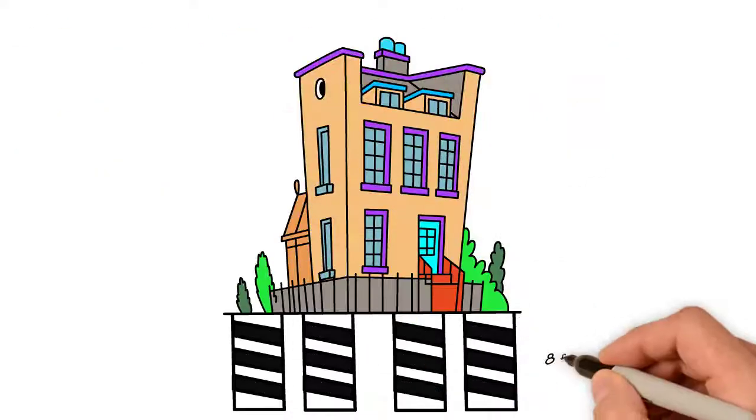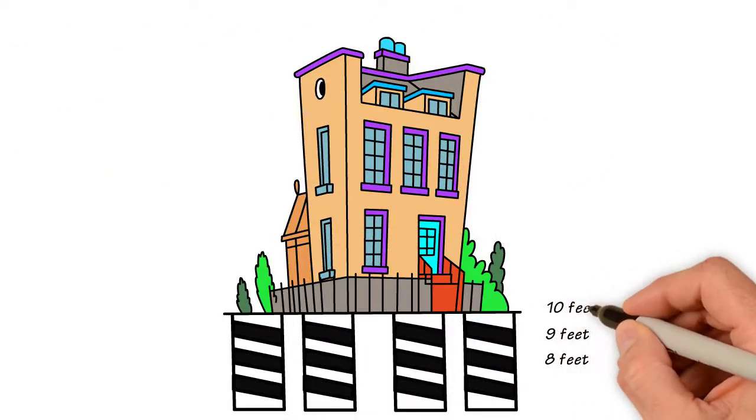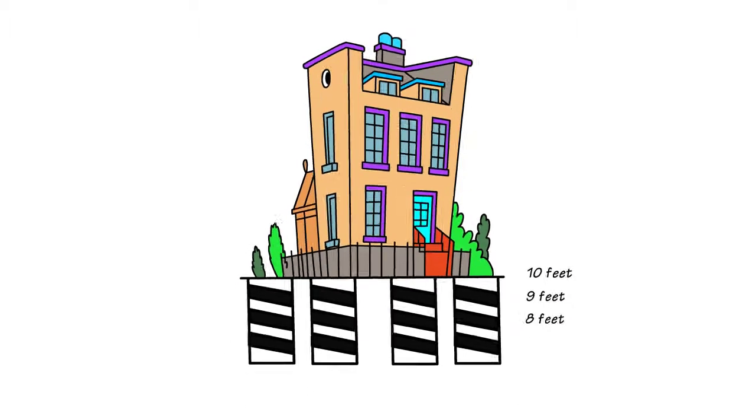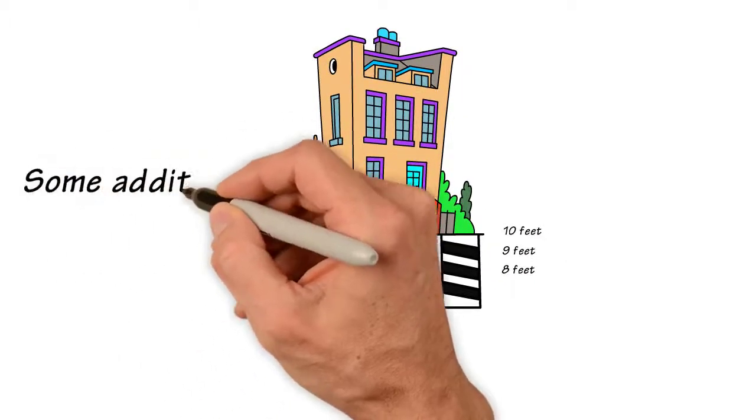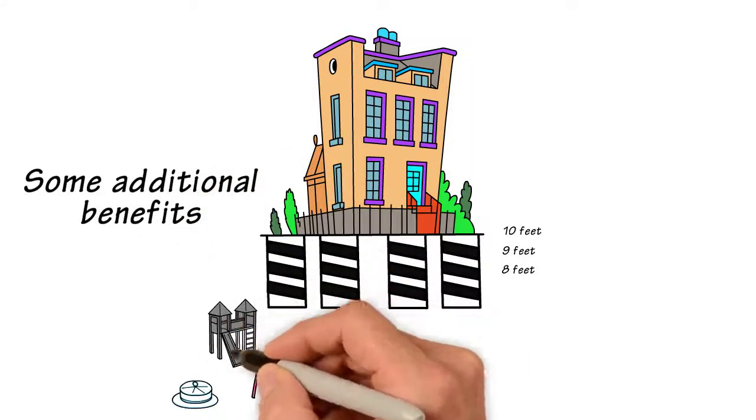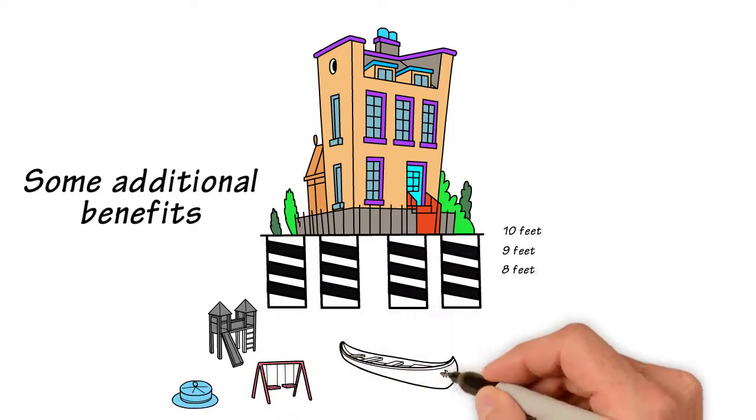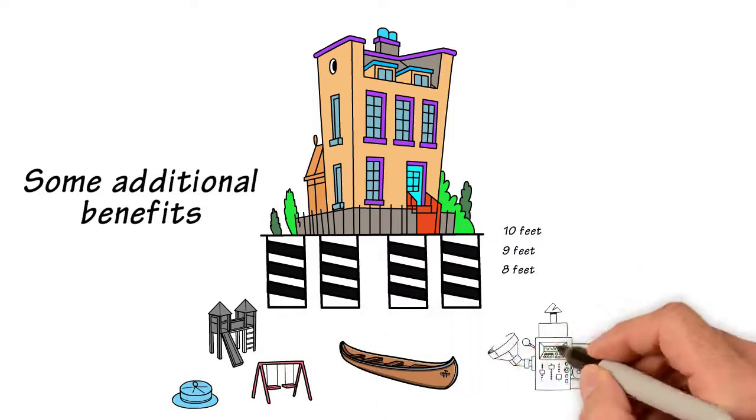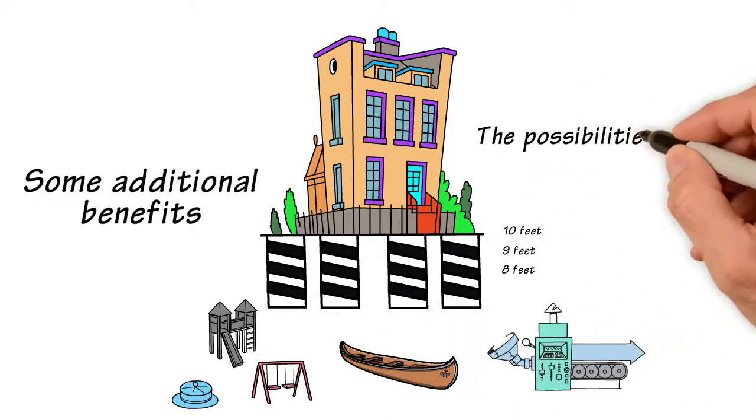When you lift your house 8, 9, or even 10 feet high, there are some additional benefits beyond the obvious ones mentioned above. For instance, lots of storage space can be created for outdoor equipment, small boats, machinery, and the like. The possibilities are endless.